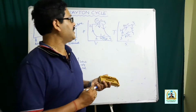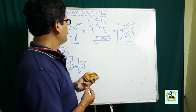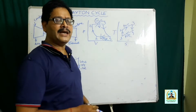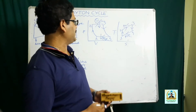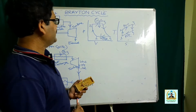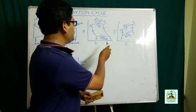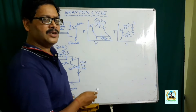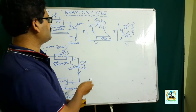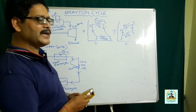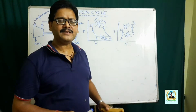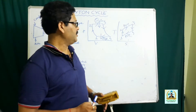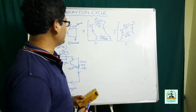If you compare the Brayton cycle with the diesel cycle, the only difference is that heat ejection takes place at constant pressure in the Brayton cycle, whereas it takes place at constant volume in the diesel cycle.